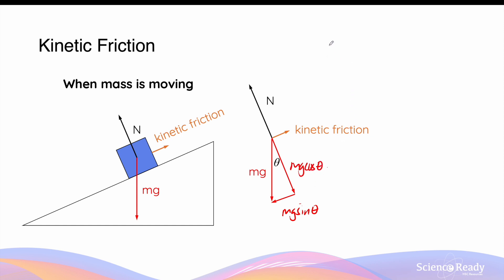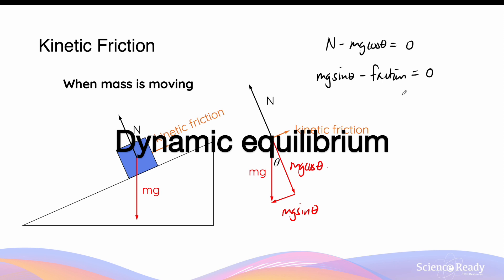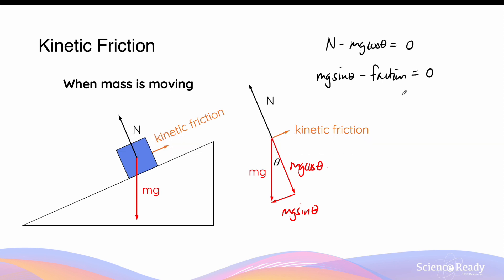Mathematically, this is expressed as: normal force minus Mg cos theta gives a net force of zero, and Mg sin theta minus the kinetic friction also gives a net force of zero. Similar to the previous scenario, the net force in both directions is again zero, which gives a dynamic equilibrium — meaning the mass moves at a constant velocity down the slope.